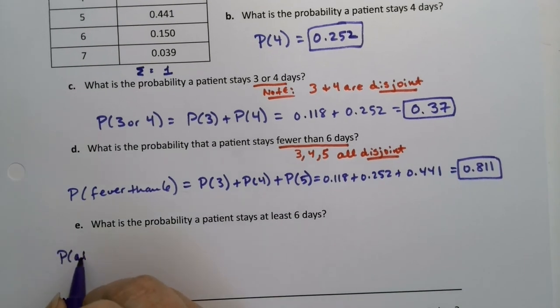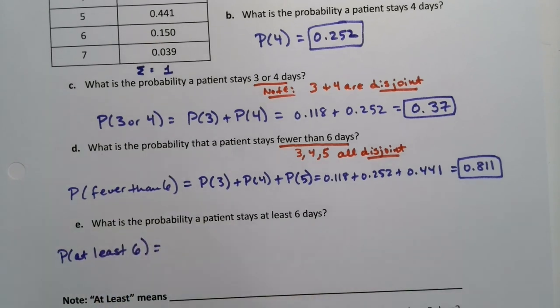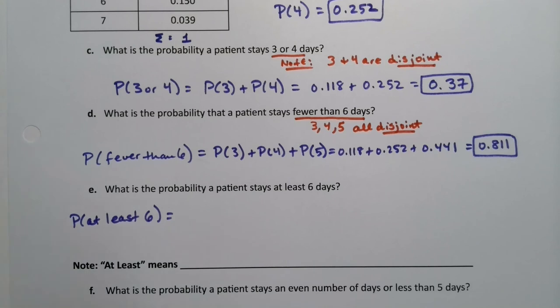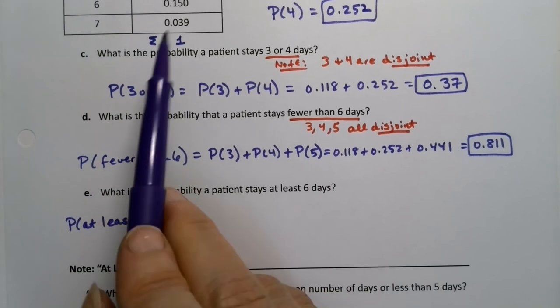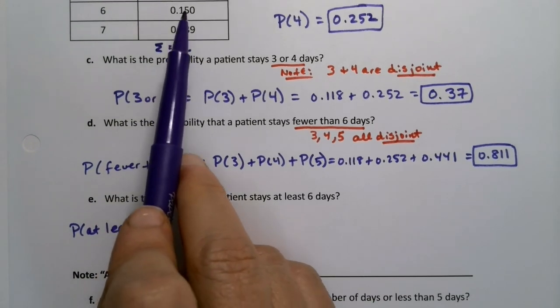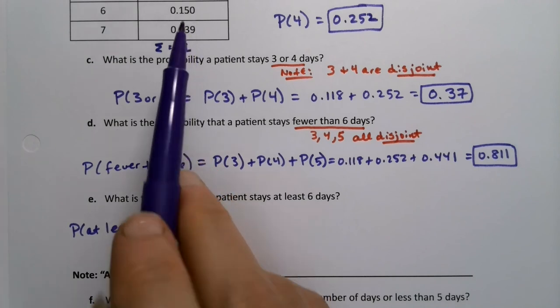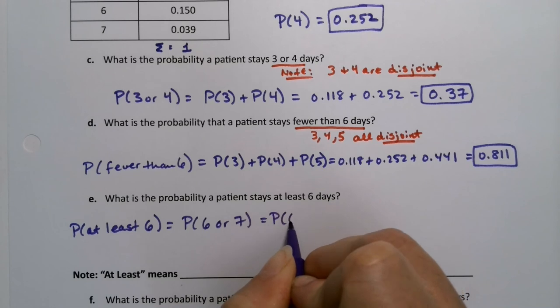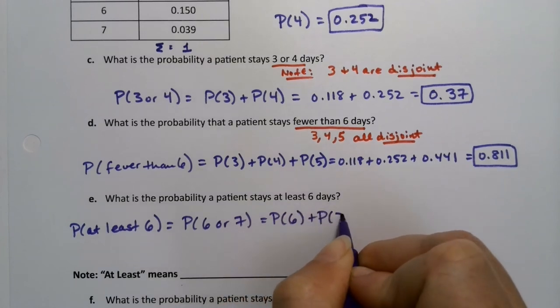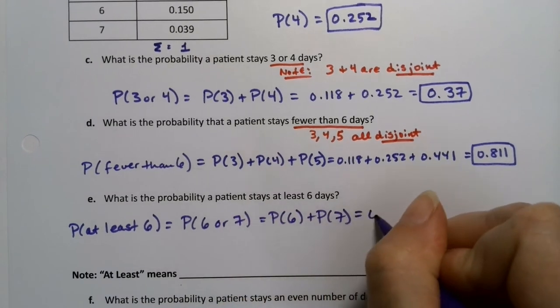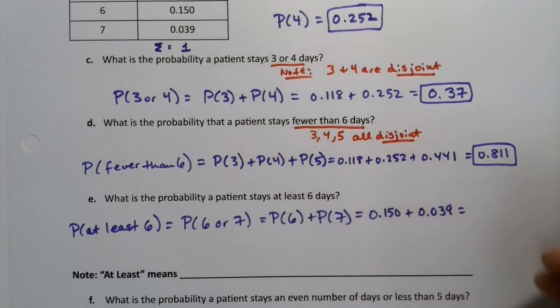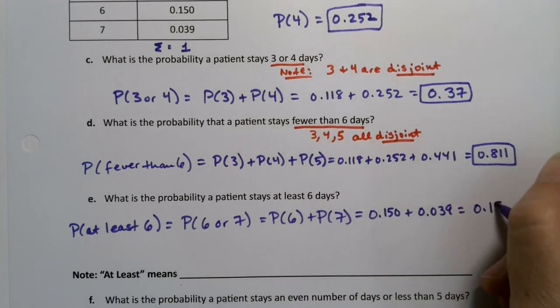What about the probability of at least 6? That's going to be important for noting what at least means. At least means that much or more, so 6 or more, so 6 or 7. This would be the probability of 6 or 7, which is the probability of 6 plus the probability of 7, again because they're disjoint. That would be 0.150 plus 0.039. No calculator required, that's 0.189.